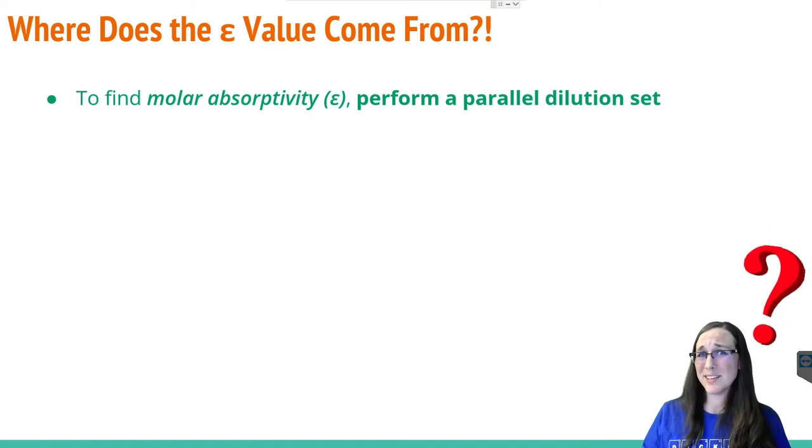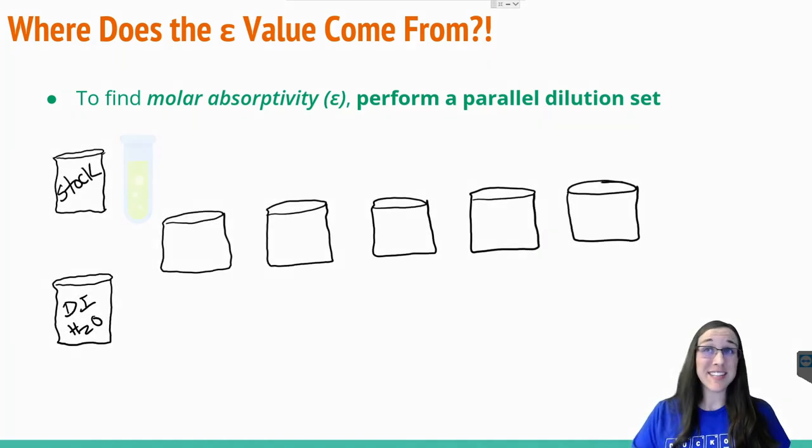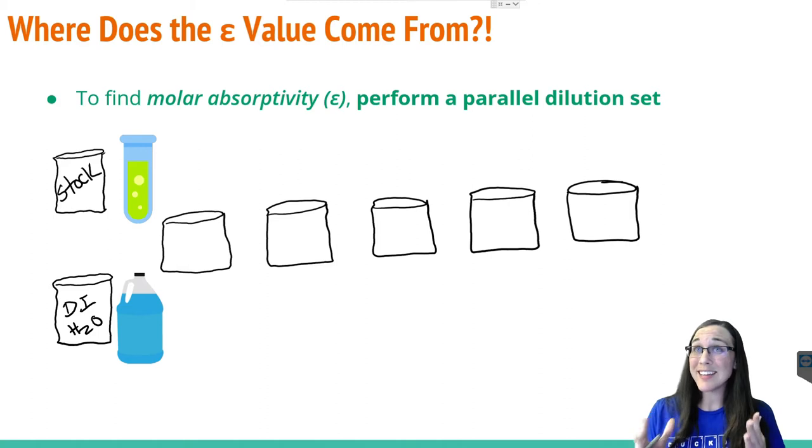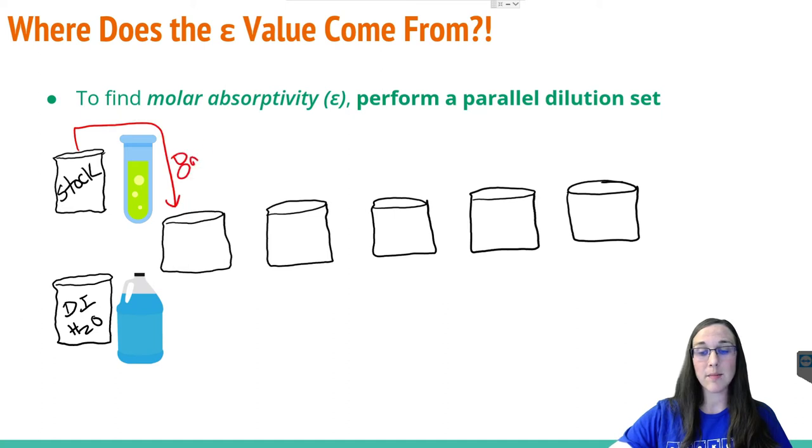Well, what is a parallel dilution set? A parallel dilution set is where we have a stock chemical and we have deionized water or DI water to dilute the stock chemical in a set of dilutions. So for example, if I took eight milliliters of the stock and I mixed it with two milliliters of the water, I would still have a really concentrated solution.